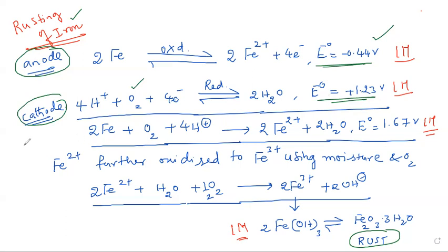The overall reaction of these two combined equations is 2Fe + O₂ + 4H⁺ gives 2Fe²⁺ + 2H₂O, and the E° value is 1.67 volts.